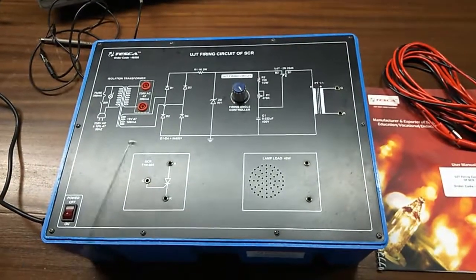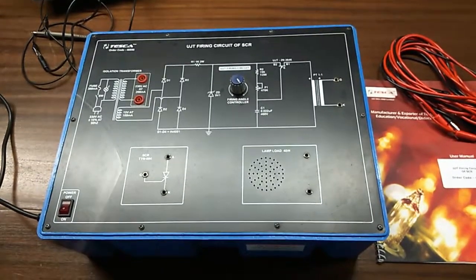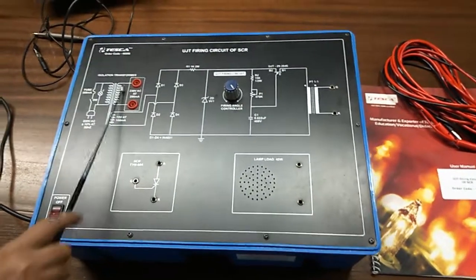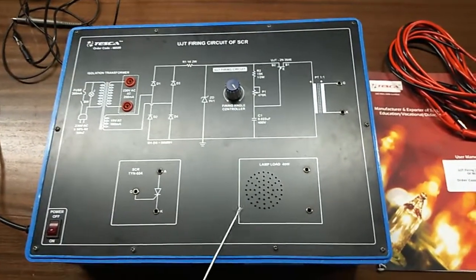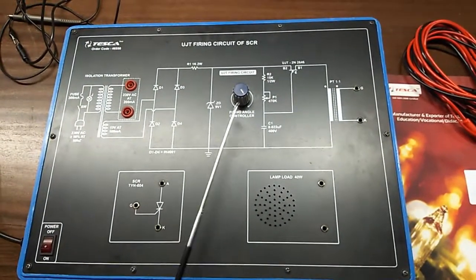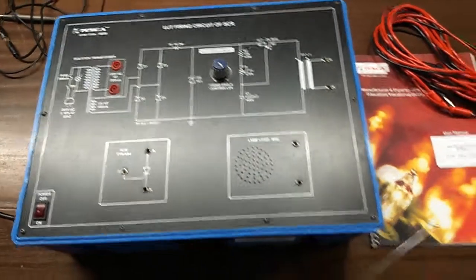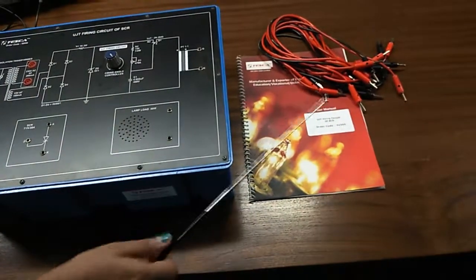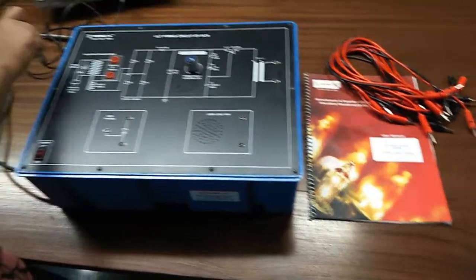So, this is the trainer kit. This is the mimic diagram given here on the trainer kit. This is the SCR, and this is isolation transformer and this is pulse transformer. This is the lamp load, this is firing angle controller potentiometer, this is main switch to turn on or off the kit. This is user manual and patch cords. These all are included in this kit, and to do this experiment we will need a CRO.